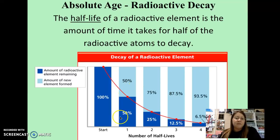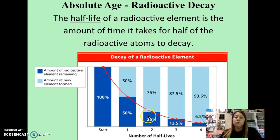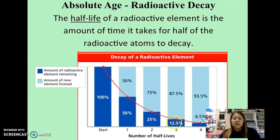Half of 50 is 25. So now we have 25% remaining of the original radioactive element, and it has transitioned into 75% of the element that it's breaking down into as it's releasing energy. Half of 25 is 12.5%. So 12.5% is what's remaining of the radioactive element, and you have 87.5% of the new element being broken down into. You can see this decline in the graph.